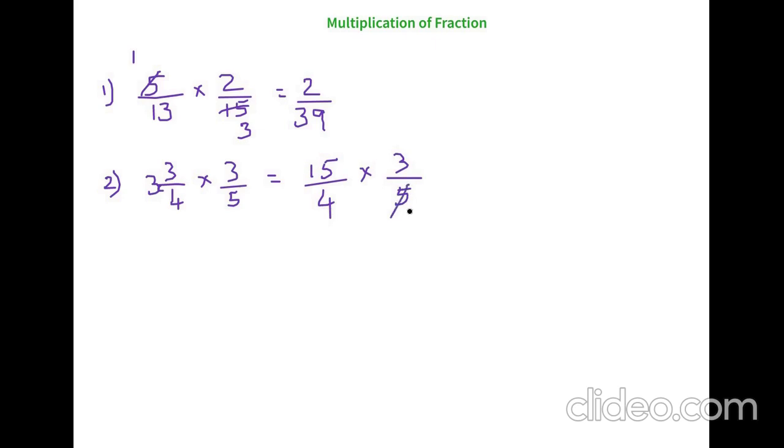Now again 5 and 15. 5 times 1, 5 times 3. So the numerator has 3 times 3. We will multiply. This is 9 and 4 times 1 is 4. Isn't it easy? Now let's see another multiplication.